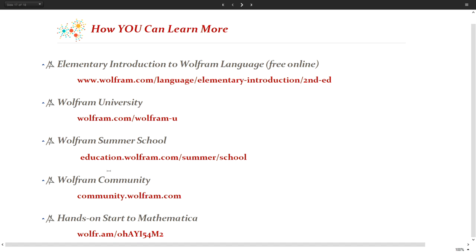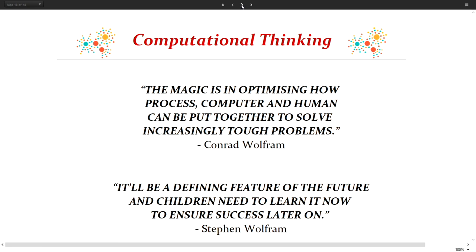There's also the Wolfram Community where you can ask and answer questions, and I've collected some resources on my website. To conclude, I'd like to quote the Wolfram brothers: when it comes to computational thinking, the magic is in optimizing how process, computer, and human can be put together to solve increasingly tough problems. Computational thinking will be a defining feature of the future, and children need to learn it now to ensure success later on. I would add: children of all ages — I think it will be very important for all of us today and in the future. Thank you.